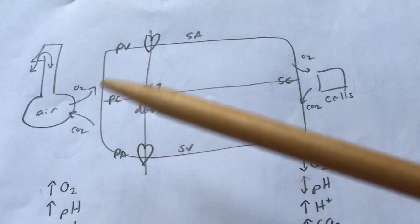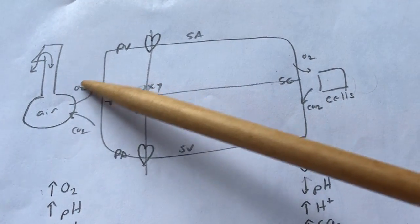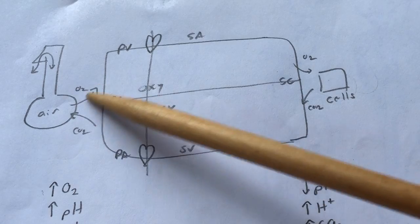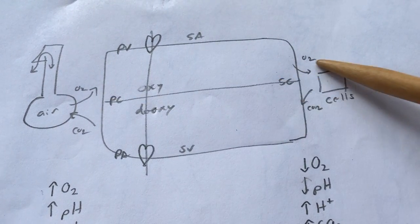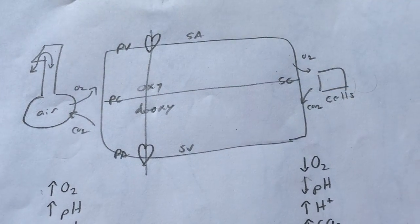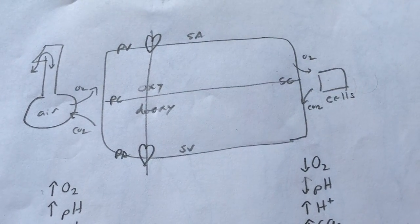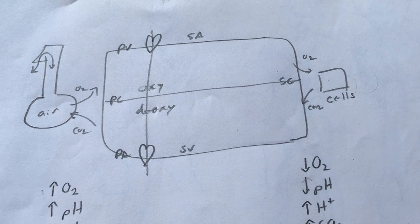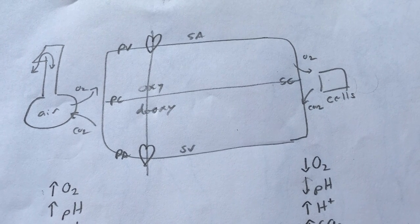The thing that allows oxygen and carbon dioxide to move at both exchange sites is diffusion — no pumps, no pores, no mechanisms — just plain diffusion. It goes from greater to lesser concentration.